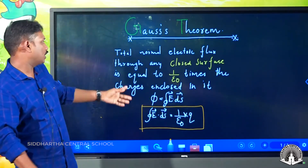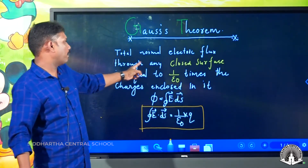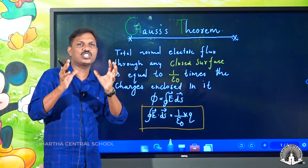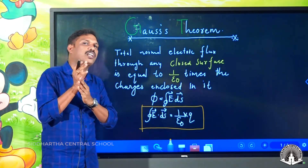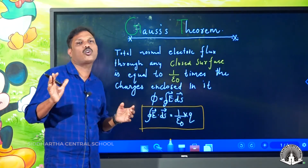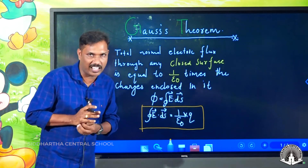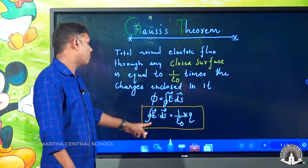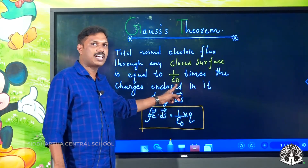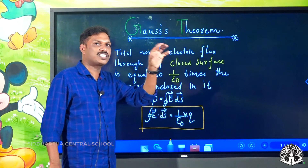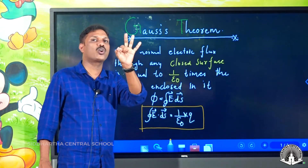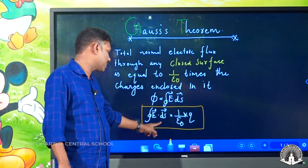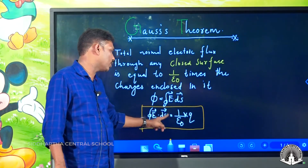The total normal electric flux through any closed surface — one closed surface is equal to the total normal electric flux enclosed within it.